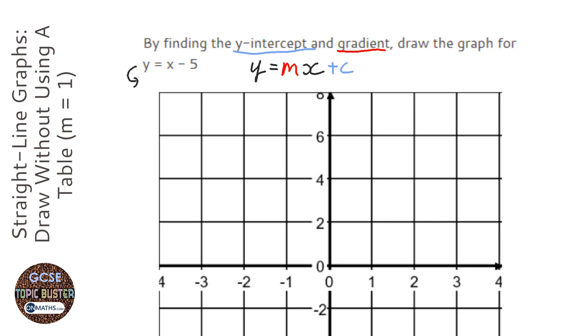I'm going to rewrite the equation to make it clearer. We can write that as y equals 1x minus 5. This 1 here is our gradient and the minus 5 is our y-intercept.